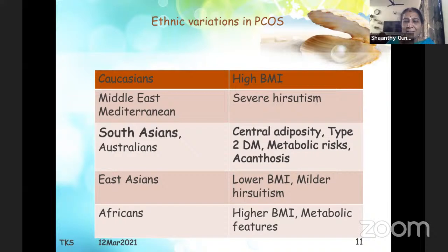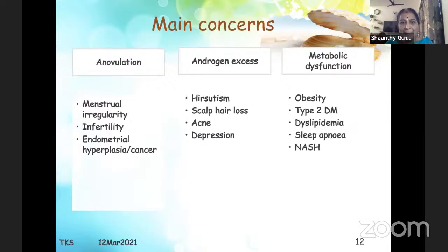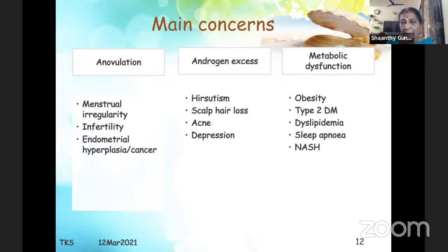There are ethnic variations — in Caucasians there is a very high BMI, but for South Asians like us, the main issue is central adiposity, type 2 diabetes mellitus, metabolic risk, and acanthosis. The main concerns of PCOS are threefold: anovulation — causing menstrual irregularity, infertility, endometrial hyperplasia, and cancer; androgen excess — hirsutism, scalp hair loss, acne, and negative body image leading to depression; and metabolic dysfunction — obesity, type 2 diabetes, dyslipidemia, sleep apnea, and non-alcoholic steatohepatitis.